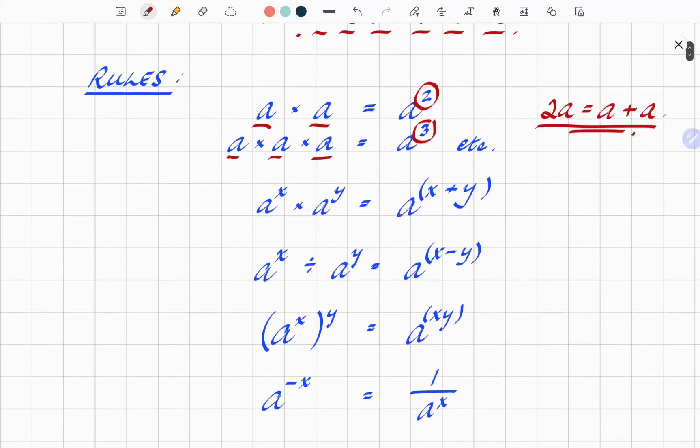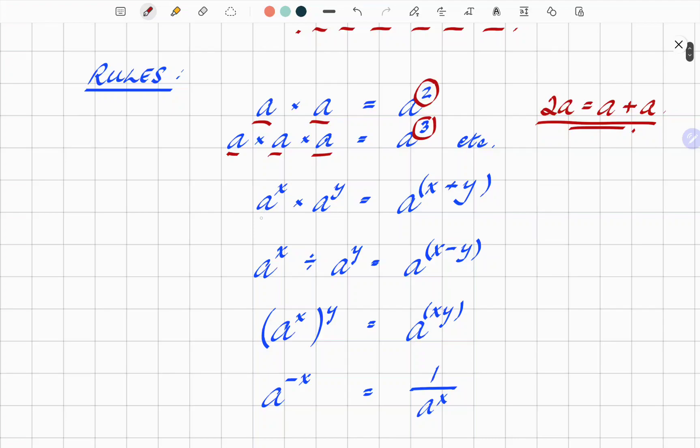The actual laws of indices, then. If I have a number A to the power X times A to the power Y, then the result is A to the power X plus Y. You add the powers when you multiply.